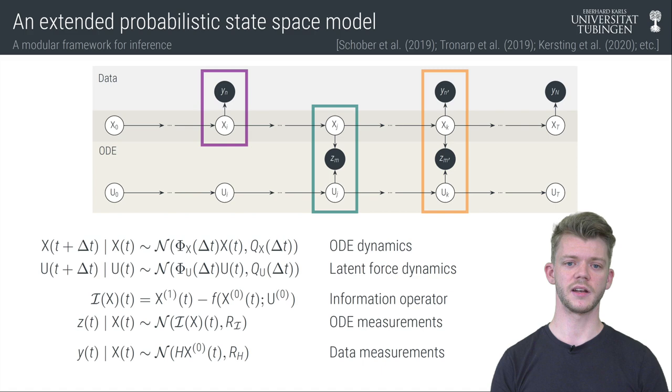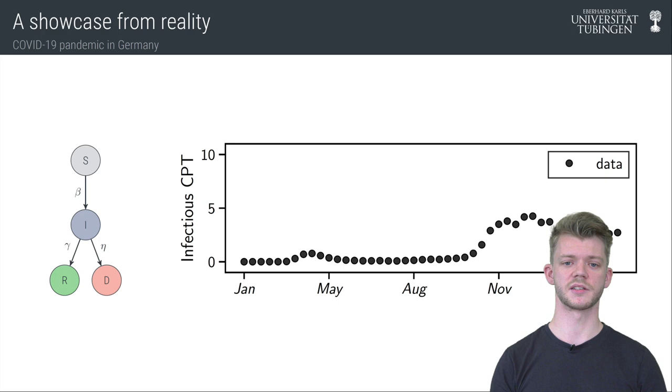Let us finally see what this may look like in practice. A prime example of the described setting is the COVID-19 pandemic. There exist epidemiological SIR-type models that are suited to describe such dynamics. The flowchart on the left shows the transition of individuals between the compartments susceptible, infected, recovered, and deceased. This is guided by parameters beta, gamma, and eta.